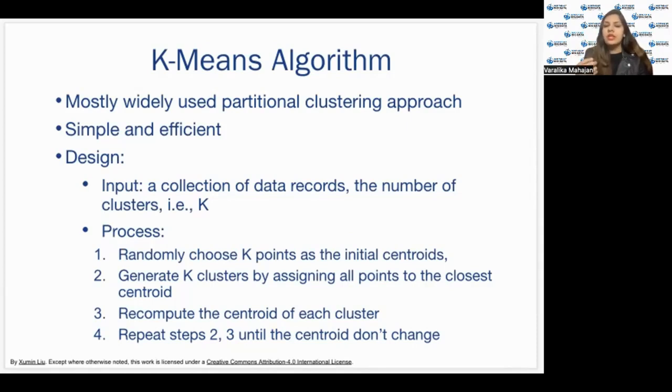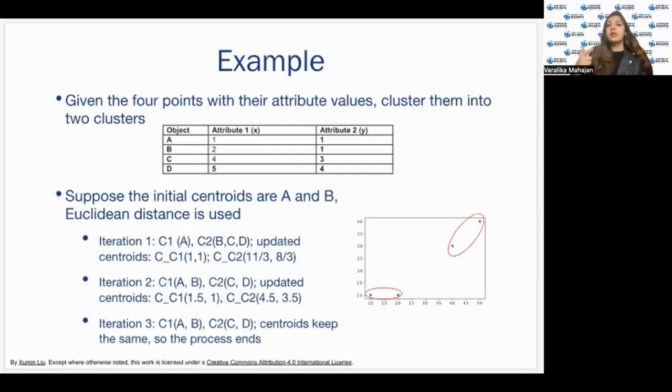Initially, we randomly choose the K points as initial centroids. So, suppose our K is equal to 2. So, we'll just pick up two points as centroids. We'll generate K clusters by assigning all points to the closest centroid. Now, we use the Euclidean distance to calculate distance of each of the objects from the centroids we have chosen and whichever centroid is closer, we assign that object to that cluster and after each object is assigned to a cluster, we re-update the value of centroids. We recalculate it by taking the average of all the points in that cluster and we keep repeating the same procedure until the centroids don't update.